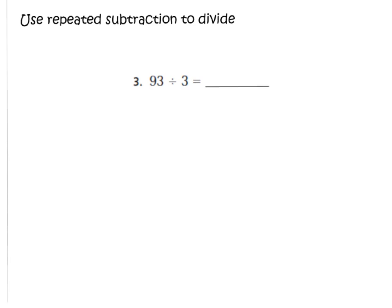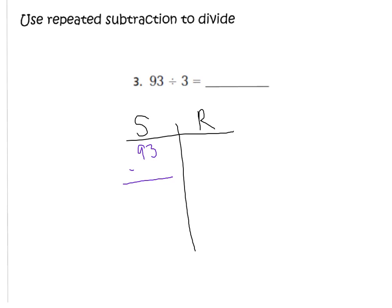Let's look at number 3 in your GoMath book: 93 divided by 3. We are going to use repeated subtraction to find the quotient. First step is we need to draw our think-and-record chart — S for subtract and R for record. When I use repeated subtraction, I'm going to subtract multiples of 3 from my dividend, which is 93, and I need to get to 0 or very close to it. I'll start with 93 and write my multiples of 3 down the side all the way up to 3 times 10, which is 30.